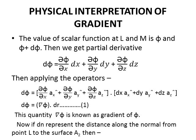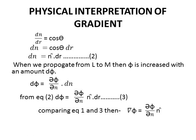If dn represents the distance along the normal from point L to surface A2, then from diagram dn upon dr equals cos theta. Therefore dn equals cos theta dr, which is dn equals n cap dot dr. When we propagate from L to M, then phi is increased with an amount d phi.